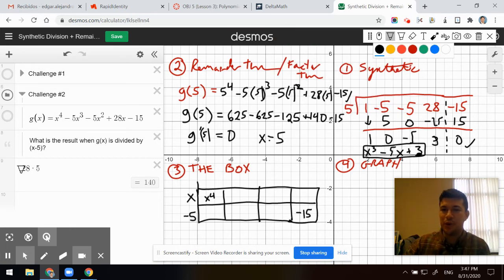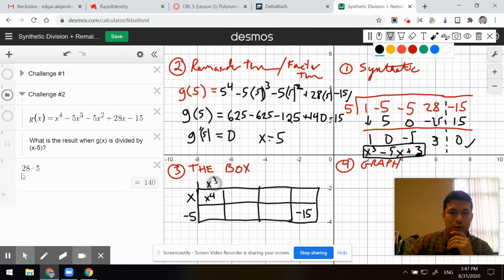So the box is just another way of factoring this without using synthetic division, without checking with remainder theorem, without using long division. So many ways to do one task to find this factor. What multiplied to x gives you x to the 4th? Well, it has to be x cubed. X cubed times negative 5 gives me negative 5x cubed.